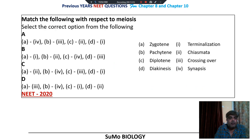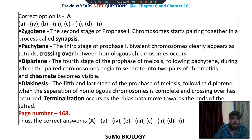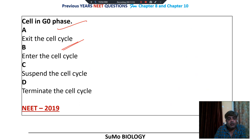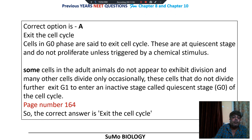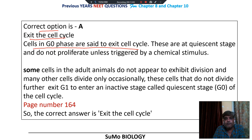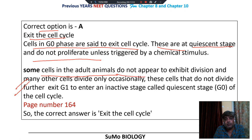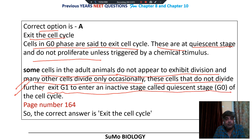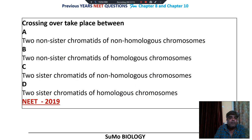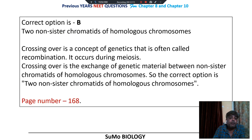Cells in G0 phase exit the cell cycle. This is clearly mentioned in NCERT. Cells in G0 phase are said to exit the cell cycle — they occur at the quiescent stage and do not proliferate further. Some cells in adult animals do not appear to exhibit division, and many divide only occasionally. These cells exit from G1 phase to enter the inactive G0 stage. Mentioned on NCERT page number 164. Crossing over takes place between the non-sister chromatids of homologous chromosomes, mentioned on page number 168.